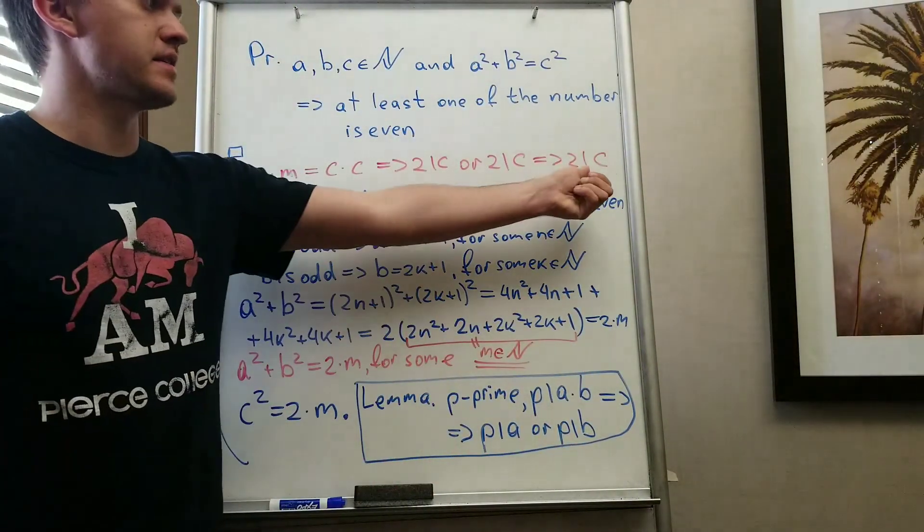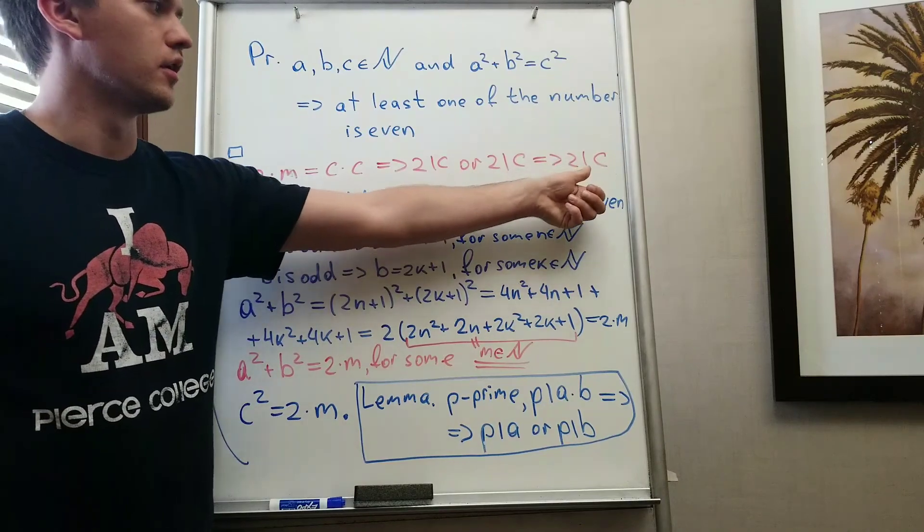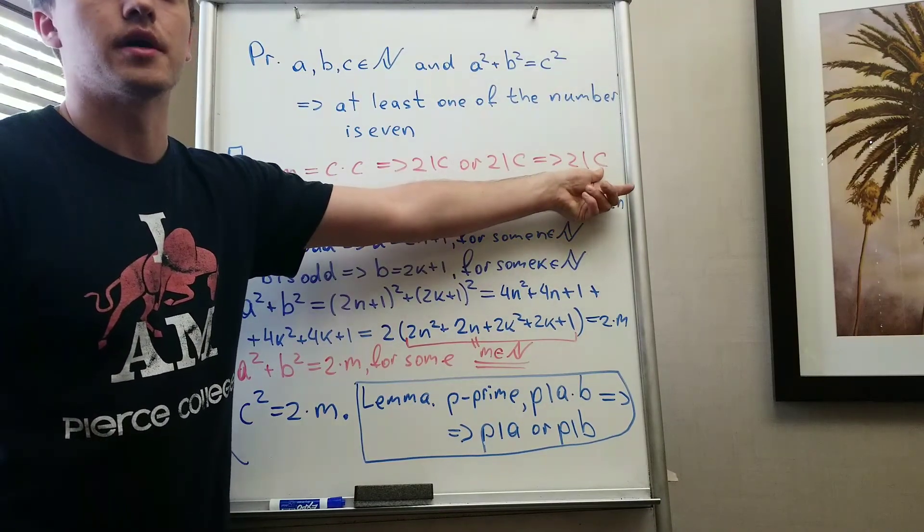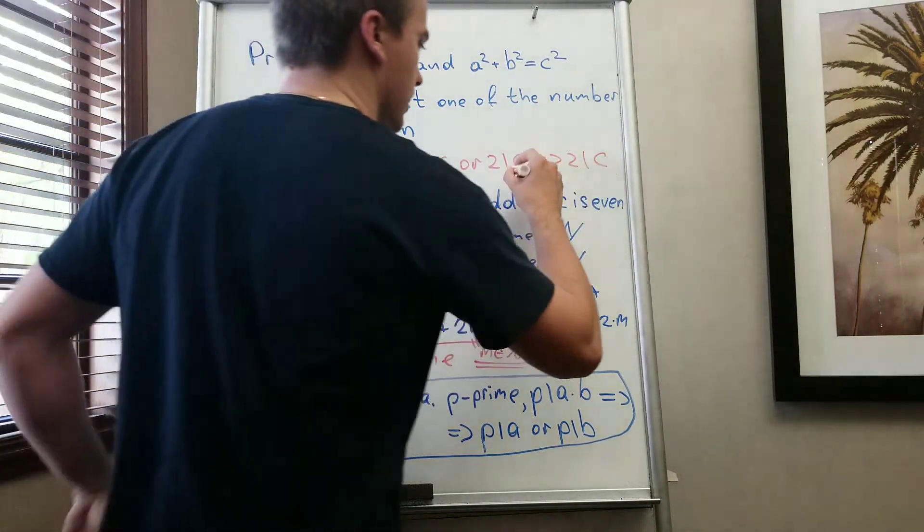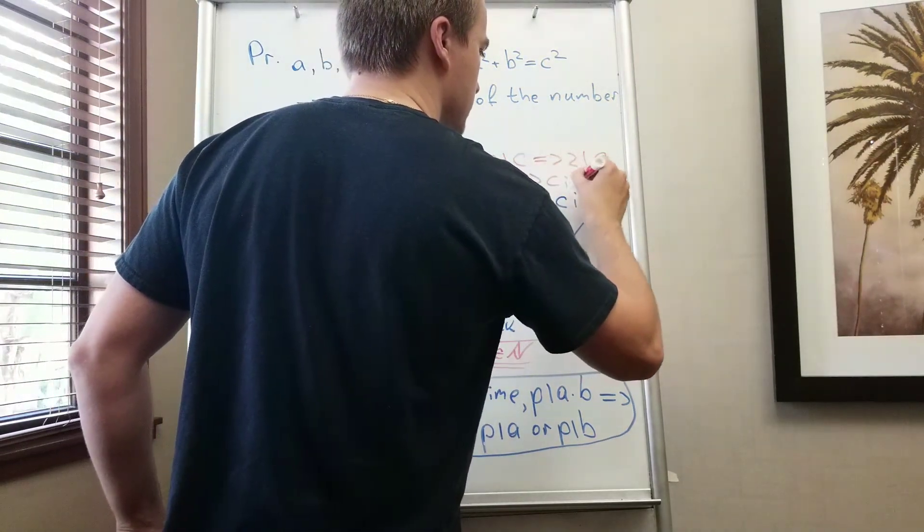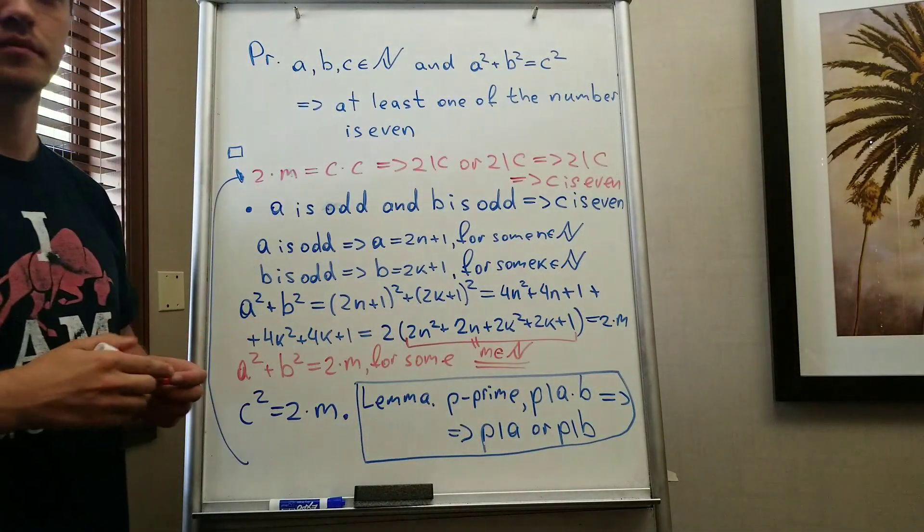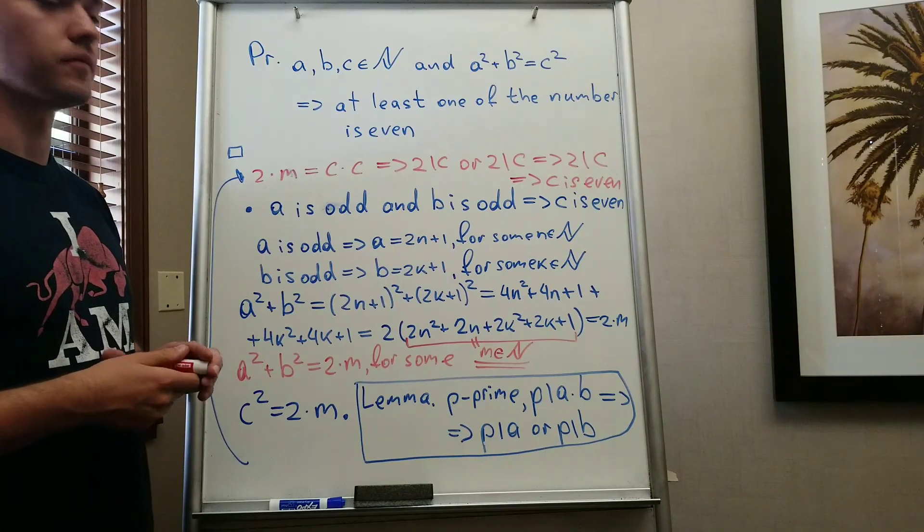And this is the last statement. It's exactly the definition of the even number. So from here you can conclude that c is even. Yeah, thank you.